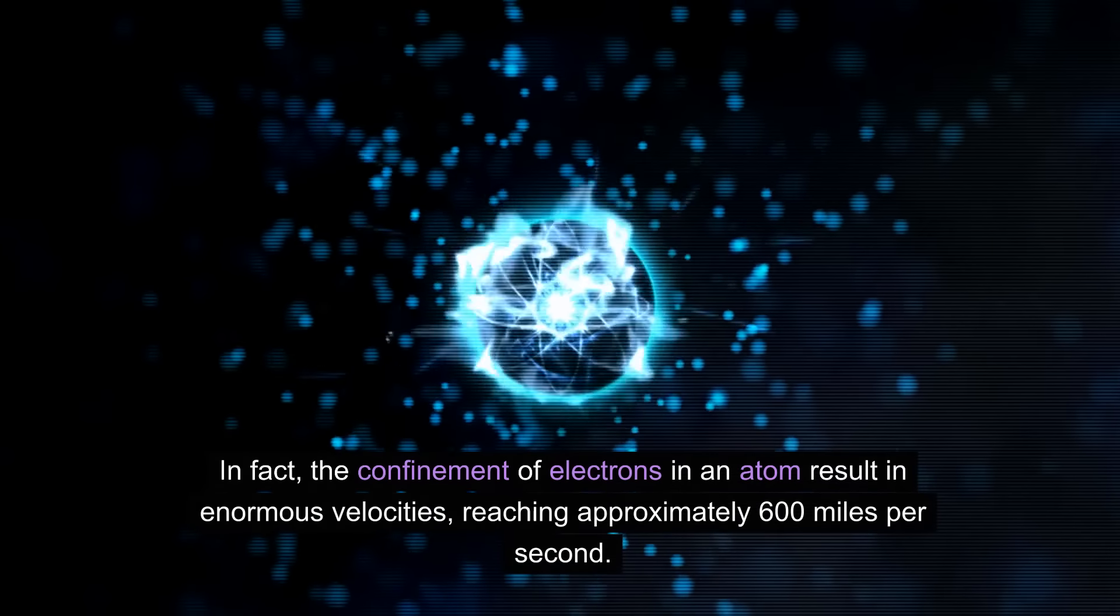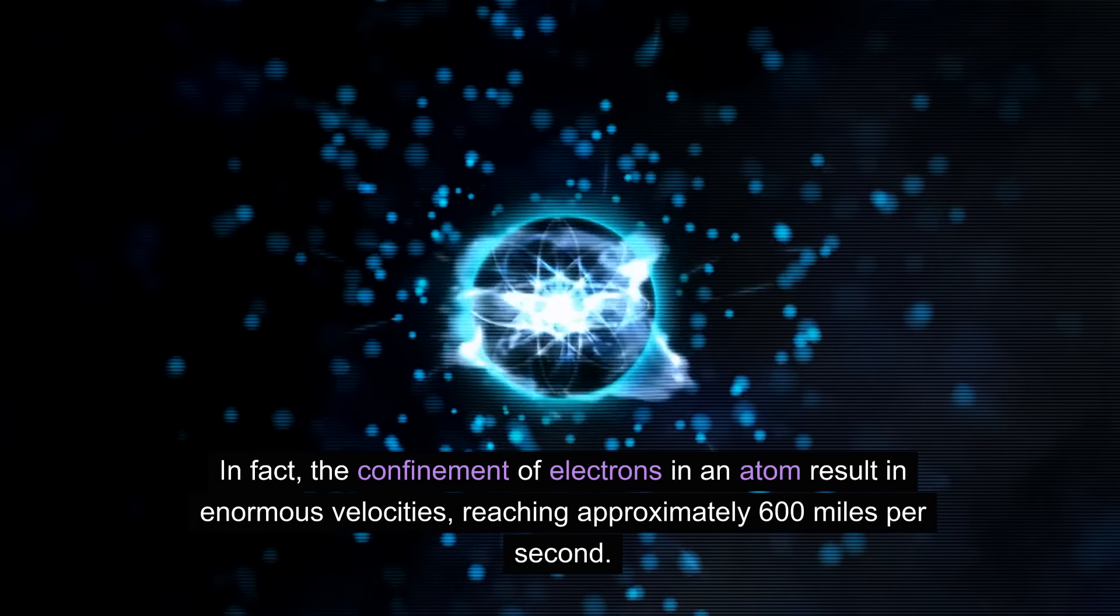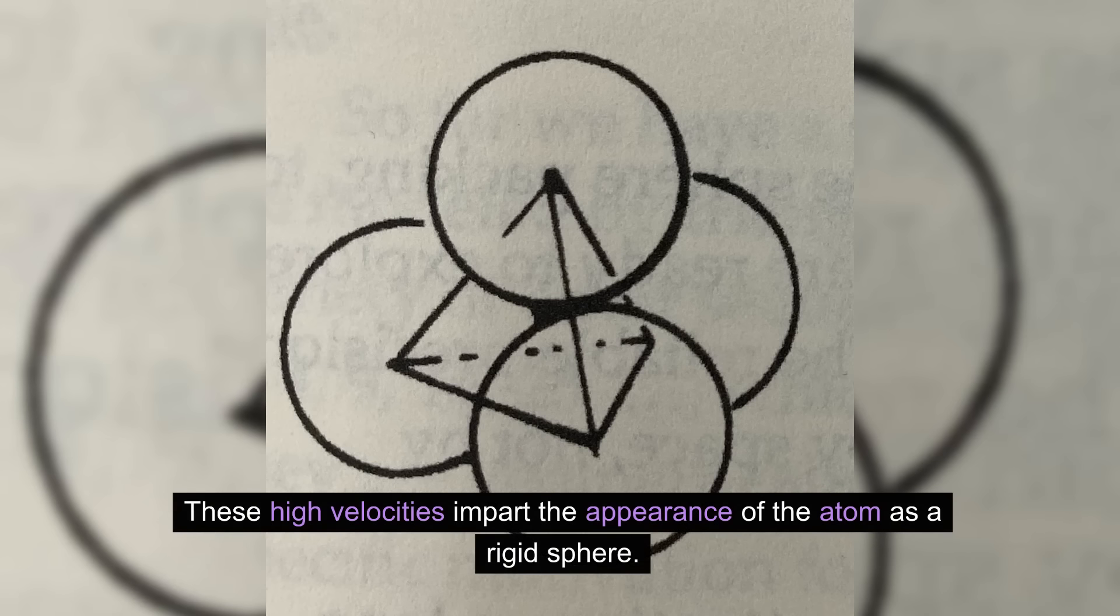In fact, the confinement of electrons in an atom results in enormous velocities, reaching approximately 600 miles per second. These high velocities impart the appearance of the atom as a rigid sphere.